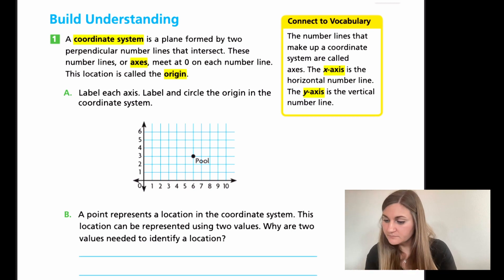It says these number lines or axes - an axis is one of them. So this would be an axis and then this would be an axis. They meet and intersect at zero. If you look at the point where they cross over, it's like one long line and one long line, and they just barely intersect at the very corner there at zero. That location is called the origin, the beginning, like the original. The origin is at zero.